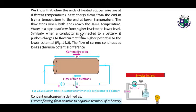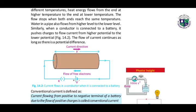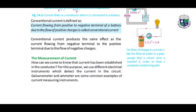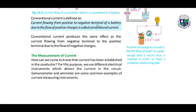Similarly, when a conductor is connected to a battery, it pushes charges to flow current from higher potential to the lower potential. The flow of current continues as long as there is a potential difference between them. Here we have the definition of conventional current: current flowing from positive to negative terminal of a battery due to flow of positive charges is called the conventional current.